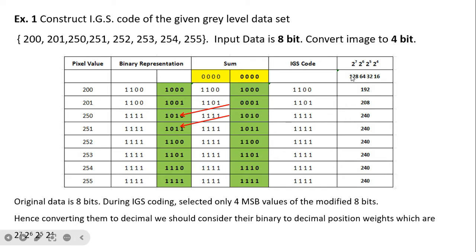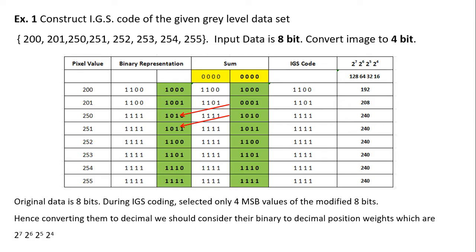To understand precision: for 8-bit representation, values range from 2^0 to 2^7. Now using only 4 bits, and to maintain high quality, we take the weights 2^7, 2^6, 2^5, and 2^4 — that is 128, 64, 32, 16. So 128+64 gives 192; 128+64+16 gives 208; and adding all gives 240. In this way, we are reducing the precision — values originally from 250 to 255 are now represented by 240.